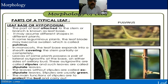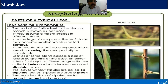The first part is the leaf base or hypopodium. The part of the leaf attached to the stem or branch is known as the leaf base. It may assume different shapes in different plants. In some leguminous plants, the leaf base may become swollen, which is called pulvinus.